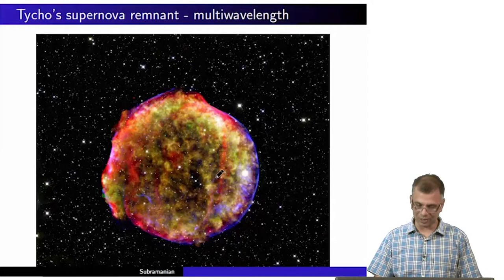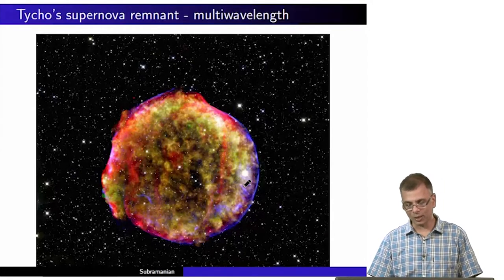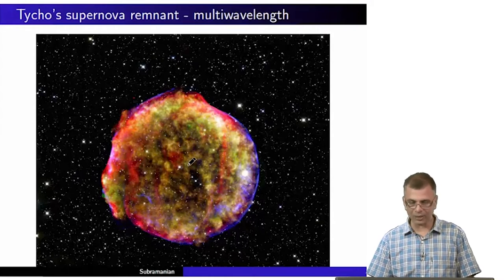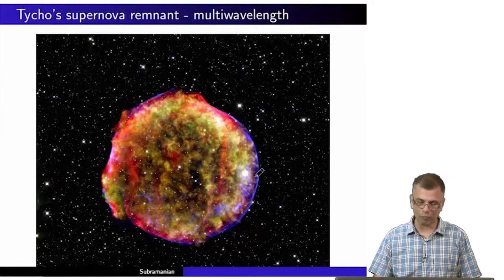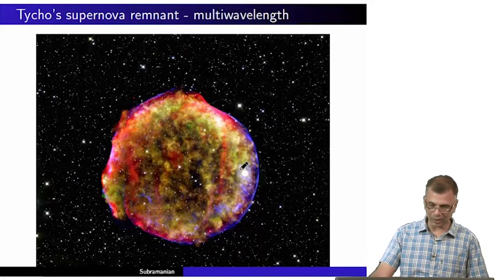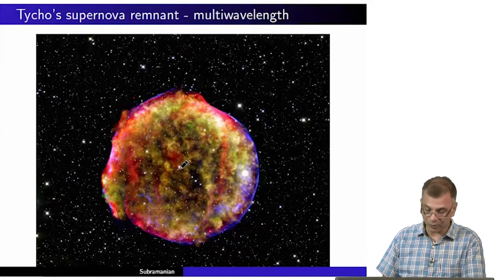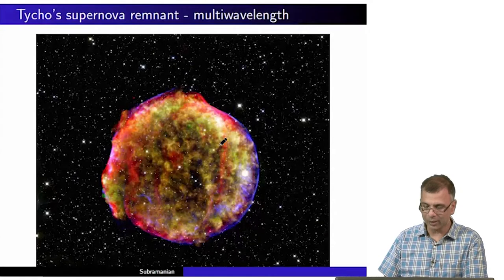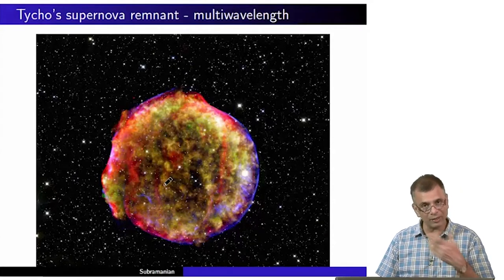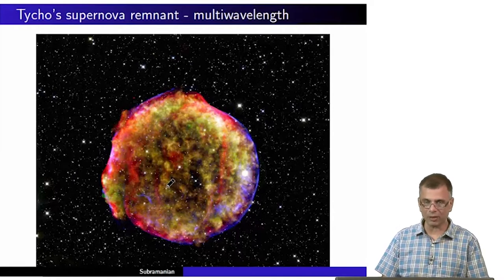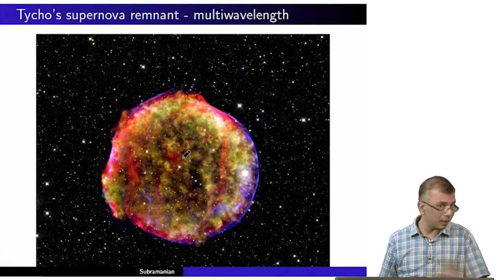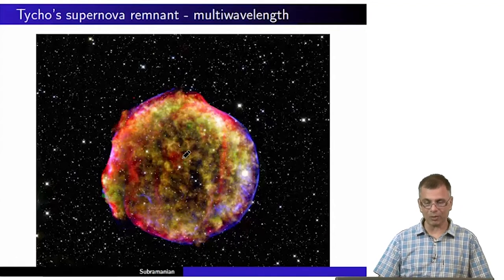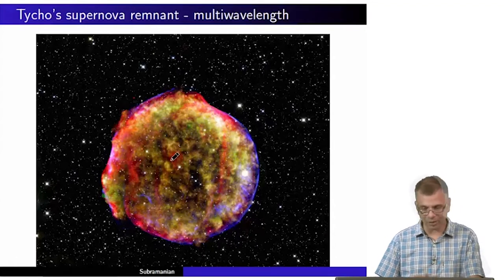This is not the supernova itself; this is the supernova remnant. The supernova would have been somewhere in the center, it went off and passed, and for reasons we will see, it set off a blast wave. The blast wave propagated quasi-spherically, in a roughly spherical manner, heating the material inside it to varying degrees. The heated material emits at various wavelengths. This is a collage of images at various wavelengths — none at visible wavelengths — it is a false color, multi-wavelength image.